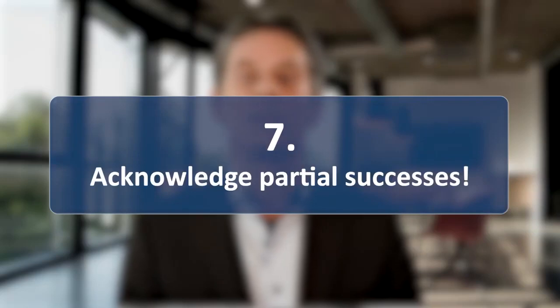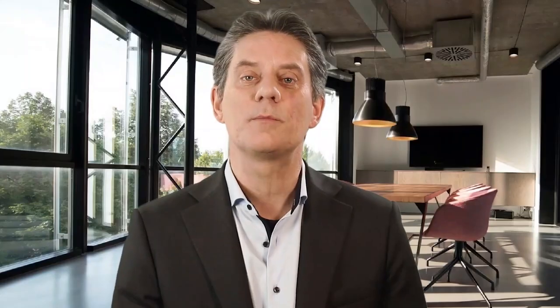Number seven: acknowledge partial successes. Visible progress is essential to motivate everyone involved. It must be clear to all employees what the purpose and benefits of the projects are — and not just at the end, but also during the process. Therefore, acknowledge and communicate important partial successes. Has a milestone been reached? Share it. This can be the completion of a construction phase or a successful first test of a prototype.